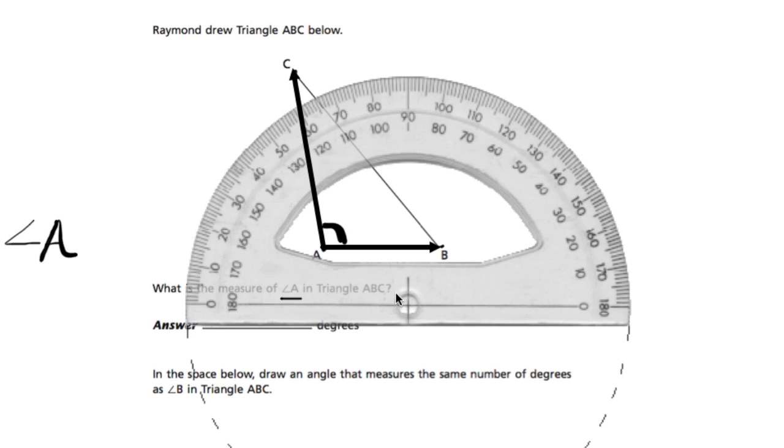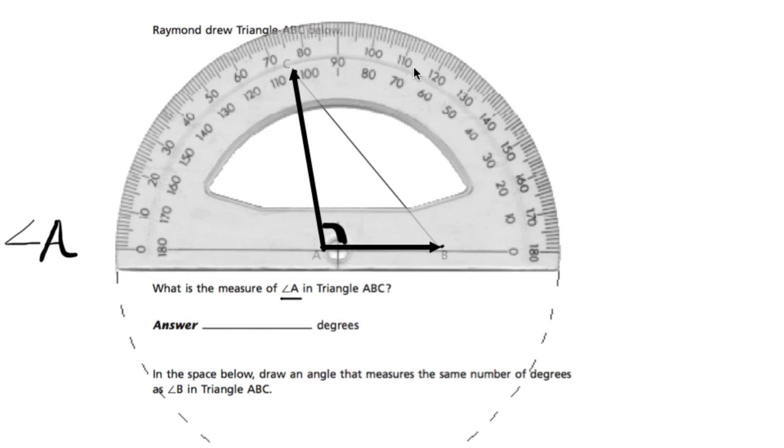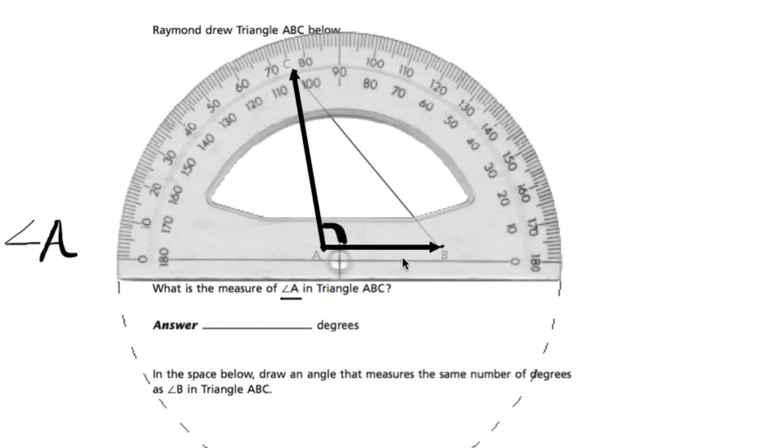Every protractor has some kind of point down here or a marked point and a zero degree line. The key is to line it up at this point right here, this intersection point.